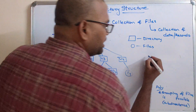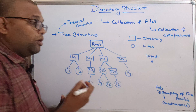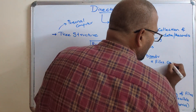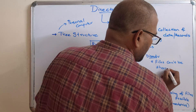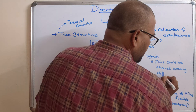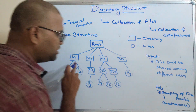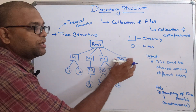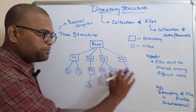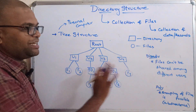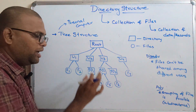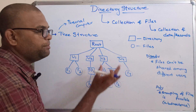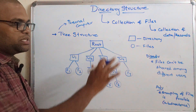In the tree structure, the advantage is that grouping is possible — the disadvantage of the two-level directory is now overcome. The disadvantage of the tree structure is that files of one user cannot be shared by another user. User one cannot access file seven because it is under user four. So only F1 and F2 can be used by user one, F3 and subdirectory one can be used by user two only, and F4, F5, F6 can be used by user three only. This inability to share files is the main drawback of the tree structure.